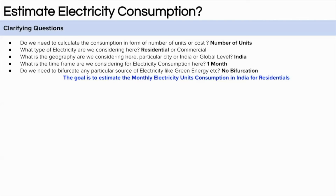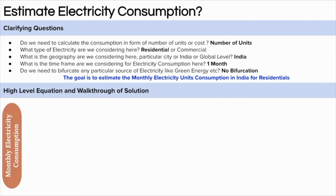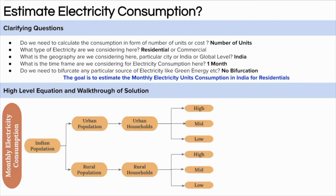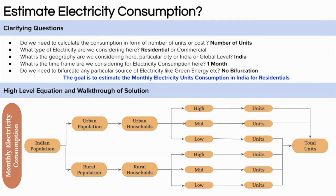Now it is time to form the goal of the problem. The goal is to estimate the monthly units consumption of electricity in India. We will start with the Indian population, bifurcate into urban and rural, then get urban and rural households since consumption happens at the household level. After getting households, we bifurcate them into upper, middle, and lower class because electricity consumption is very different among these three classes.